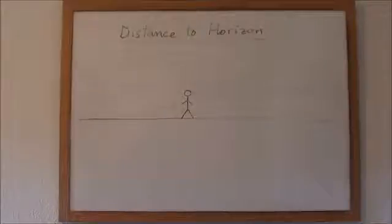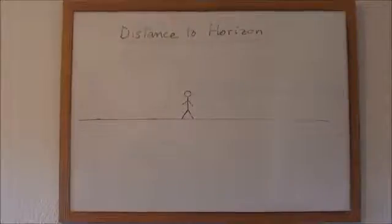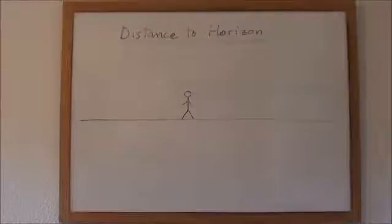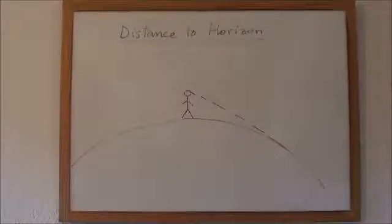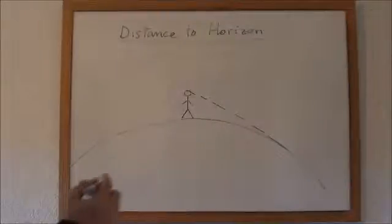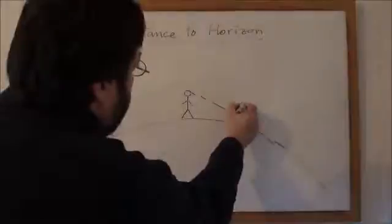But our earth is not a flat one, it is curved. Our earth is more or less a sphere and the curvature of this sphere creates our horizon. That means that we cannot see further than a certain distance.